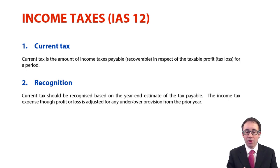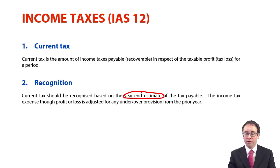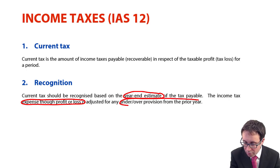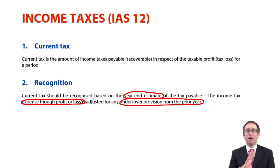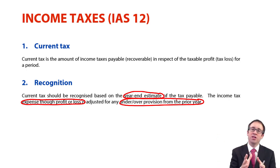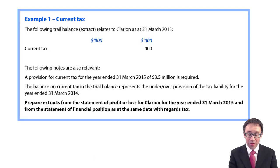If we go through and look at current tax, within your financial statements, the tax payable is the year-end estimate. That's what you see in the statement of financial position. Just be careful that it also gets expensed through profit or loss, but you need to adjust for any under or over provision from the previous year. Going back into the world of IAS-8, you're not going back and retrospectively correcting any under or over provision in the prior year's accounts. If you didn't pay enough or you paid too much, you make the adjustment this year. It is an accounting estimate and accounting estimates are dealt with prospectively, in the current year.